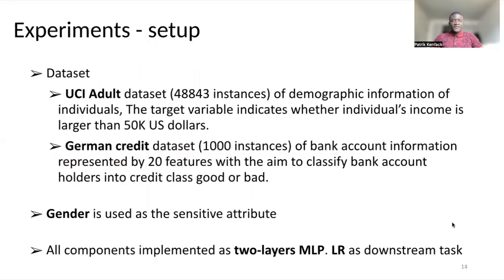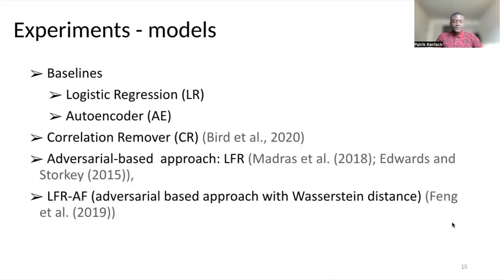Regarding the experiment and the results, we experiment on two datasets: the Adult dataset and the German credit dataset. Those are benchmark datasets used in machine learning fairness. The first dataset predicts if an individual's income is greater than 50,000 US dollars per year. The German credit dataset classifies account holders as good or bad accounts. We use gender here as a sensitive attribute in both datasets. All components of the model were implemented using multilayer perceptrons. And then we use a logistic regression model as a task classifier. This means we train the classifier from the representation that we learn.